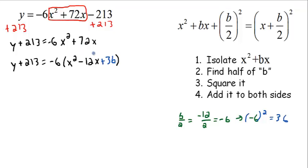Like in our last problem, we're not just adding 36. We're actually multiplying -6 by 36, so we're subtracting 216 from the right side because of the multiplier we factored out. So I subtract 216 from the left side. Now our equation is balanced: y + 213 - 216, which is y - 3.